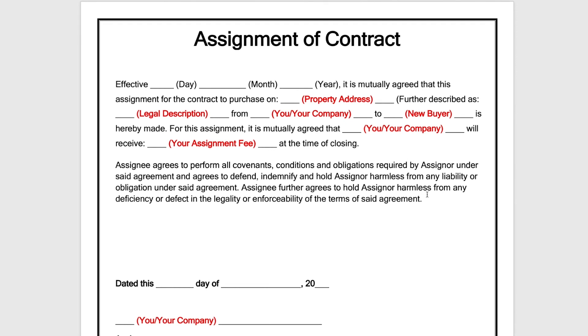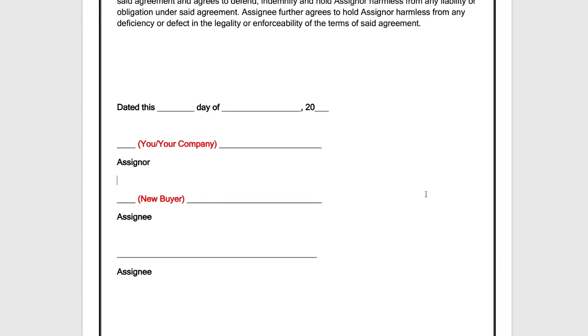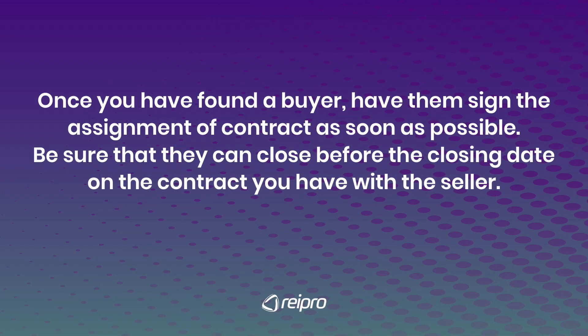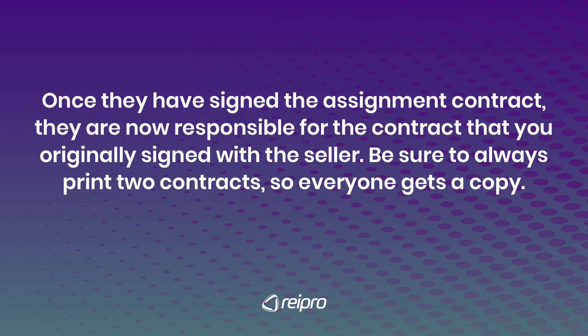As we scroll down, you're going to date it and sign it as the assignor; your new buyer is going to sign it as the assignee. Once you have found a buyer, have them sign the assignment of contract as soon as possible. Be sure that they can close before the closing date on the contract you have with the seller. Once they have signed the assignment of contract, they are now responsible for the contract that you originally signed with the seller.